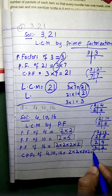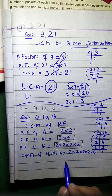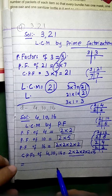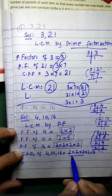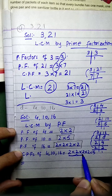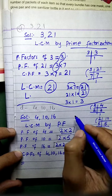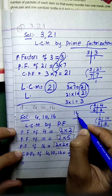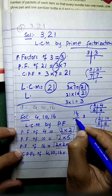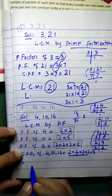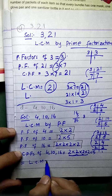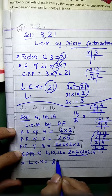Now multiply the common and non-common factors together: 2 times 2 times 2 times 2 equals 16, then 16 multiplied by 5 equals 80. Therefore LCM is equal to 80.